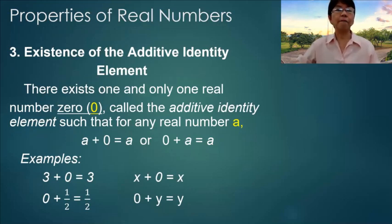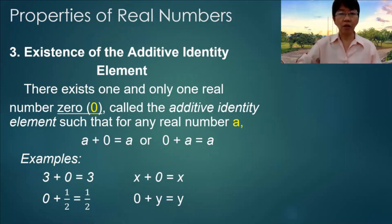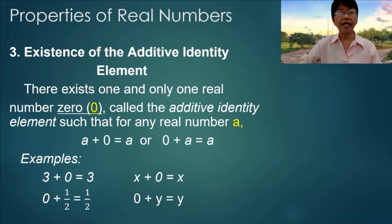Number three: Existence of the Additive Identity Element. There exists one and only one real number, which is 0, called the additive identity element, such that for any real number a: a plus 0 is equal to a, or 0 plus a is equal to a. The examples are self-explanatory.